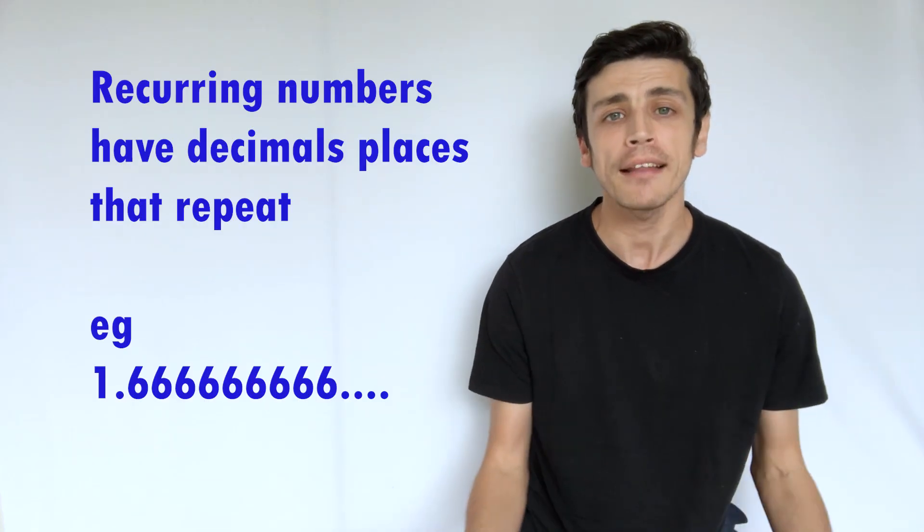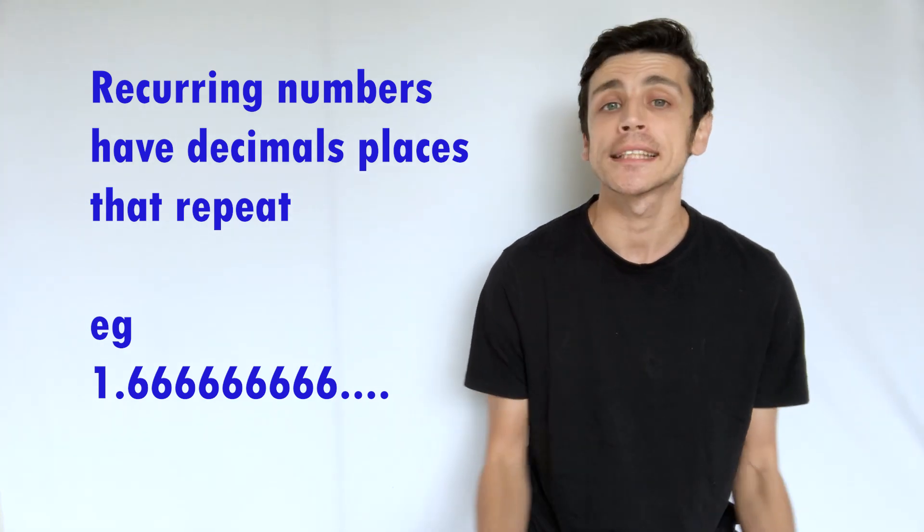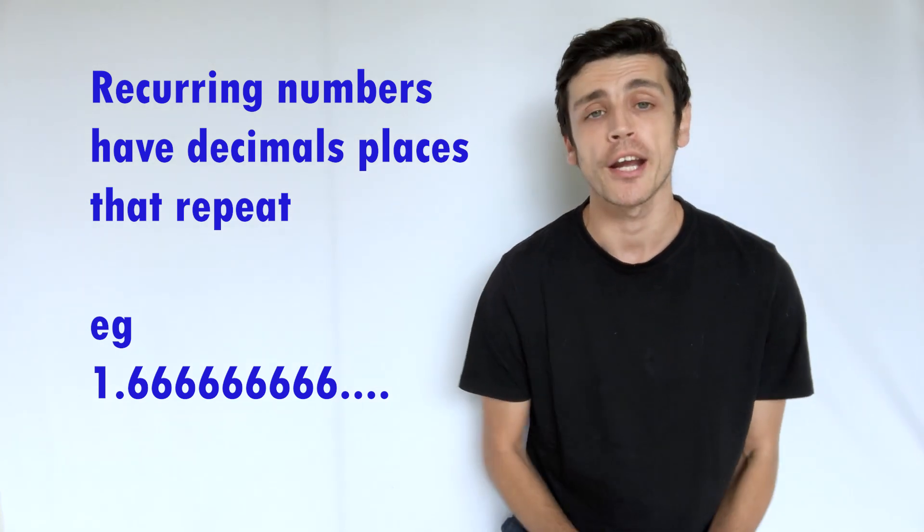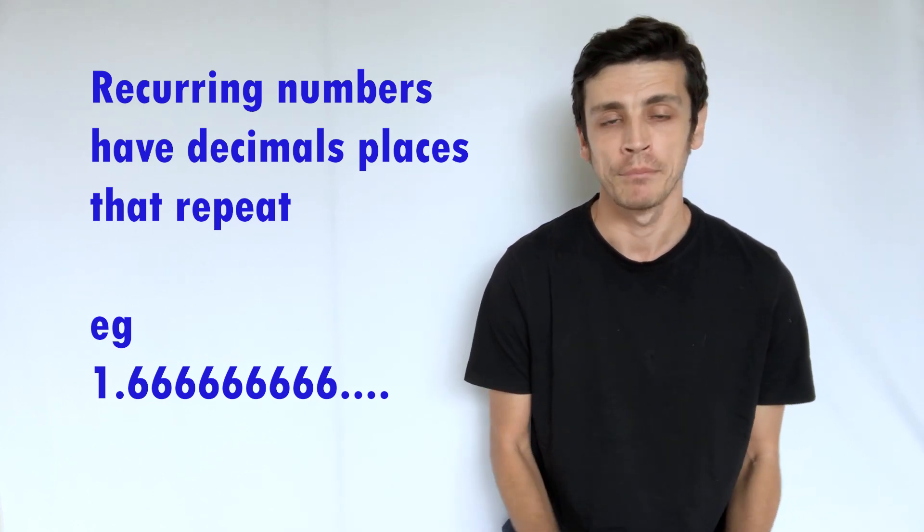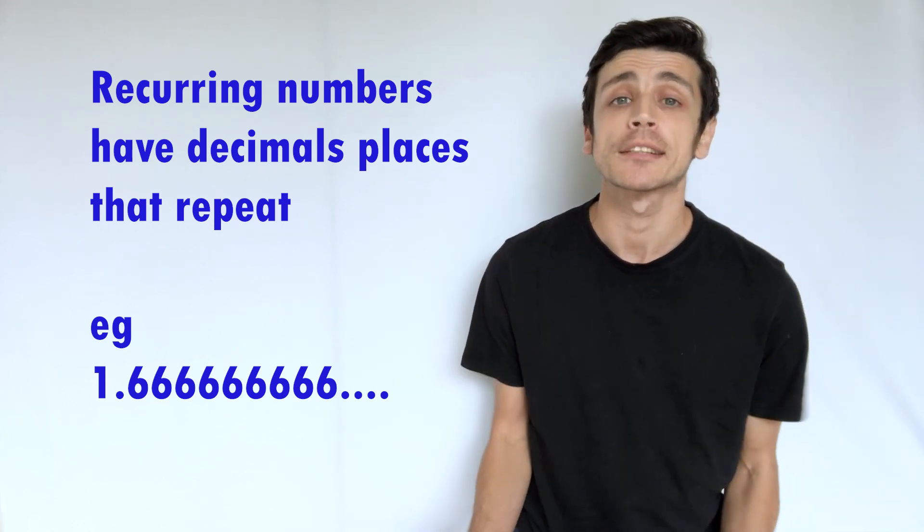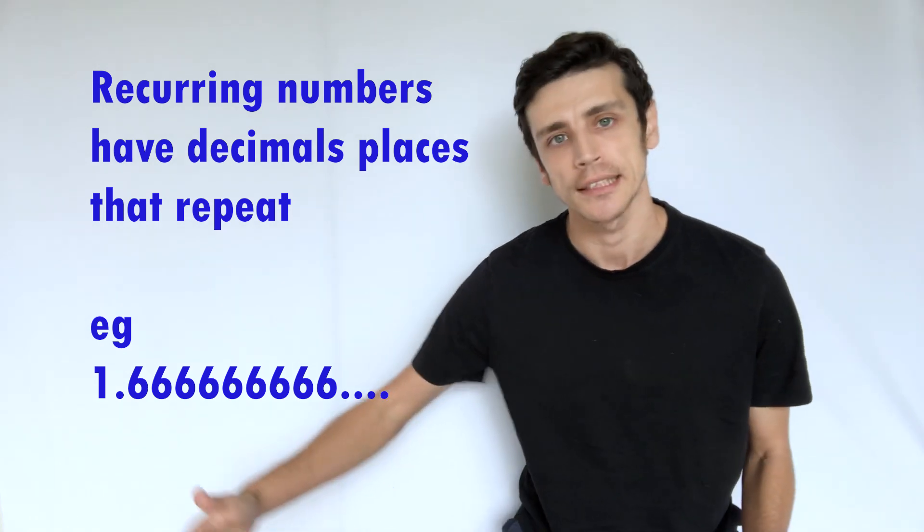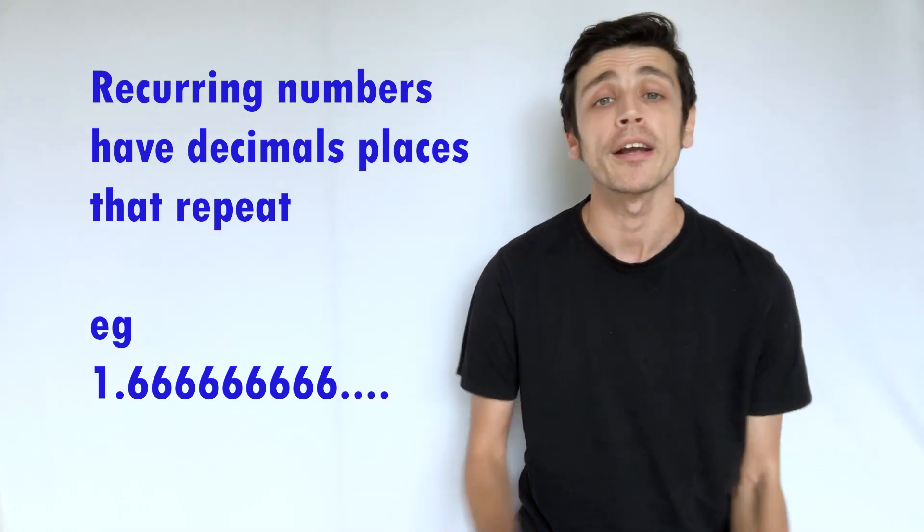And again you can do this with negative numbers as well. You can actually do this as well with recurring numbers. So if you get like let's say 1.6 recurring, and what we mean by recurring is in the decimal part it will just repeat over and over again. So in this case, 1.6 recurring is 1.6666666 going on forever.